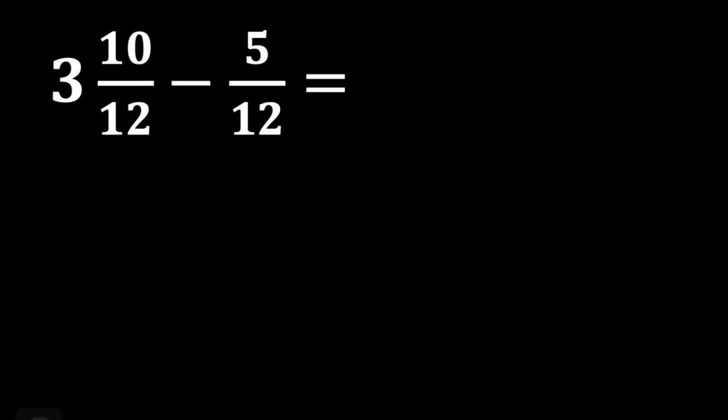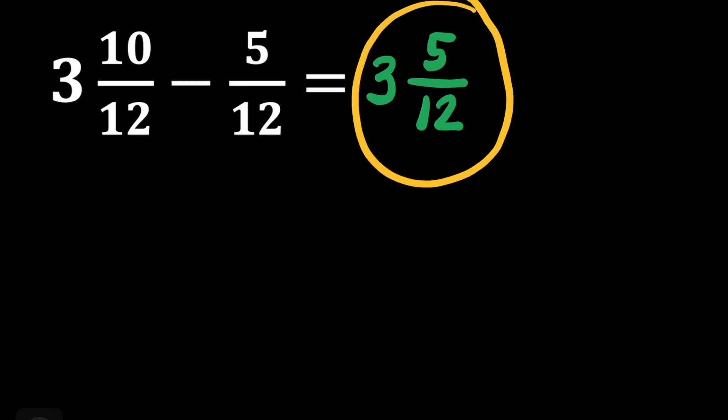We have here 3 and 10 twelves minus 5 twelves. This is also a very easy question because we can just subtract the 5 twelves from the 10 twelves. So we have to copy first the whole number, which is the 3, and then subtract the numerator. That's 10 minus 5, that's going to be 5, and then copy our denominator. If this mixed number is already in the lowest term, then we can say that this is our final answer. That's 3 and 5 twelves.